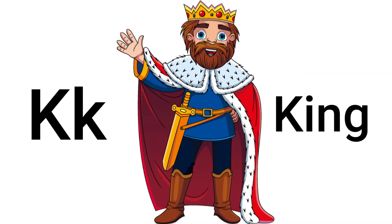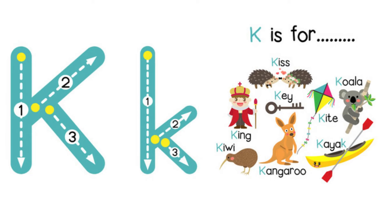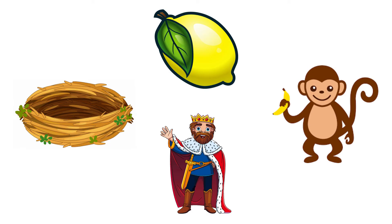Super! It is the king. K is for king. Do you think you can use your pointer finger to trace along the big K and the small K? Let's make the K sound as you trace. Fantastic! Okay, let's have a look at our next letter.